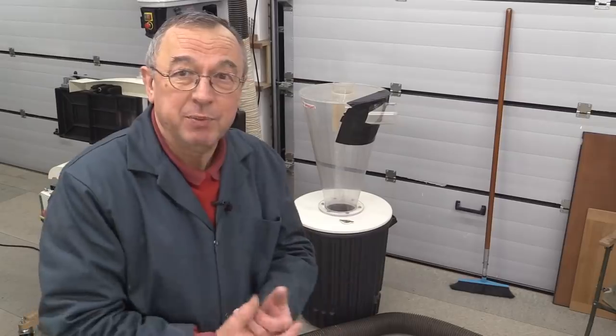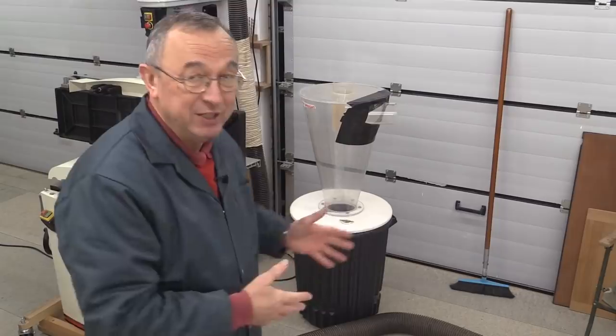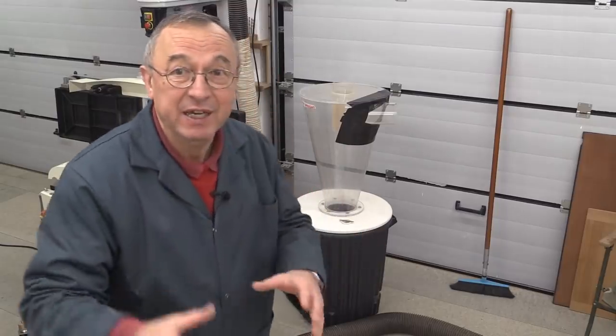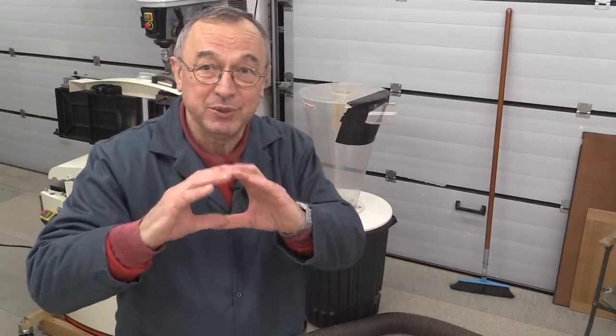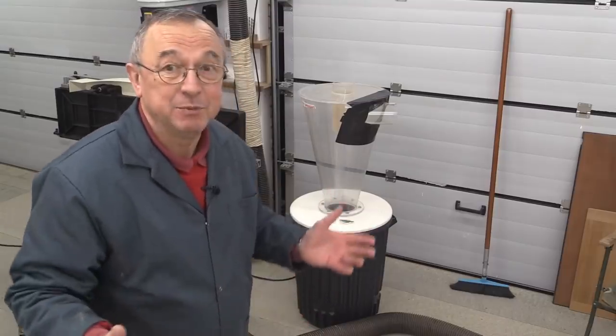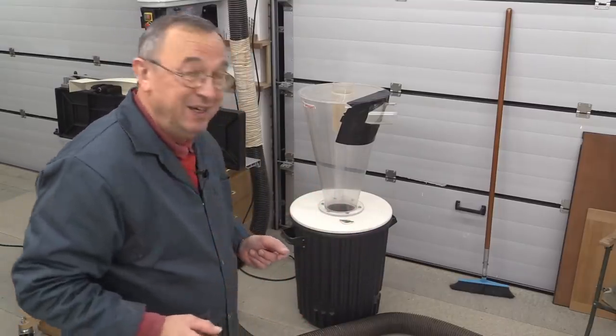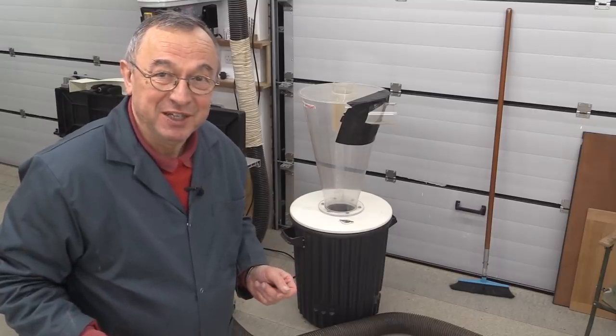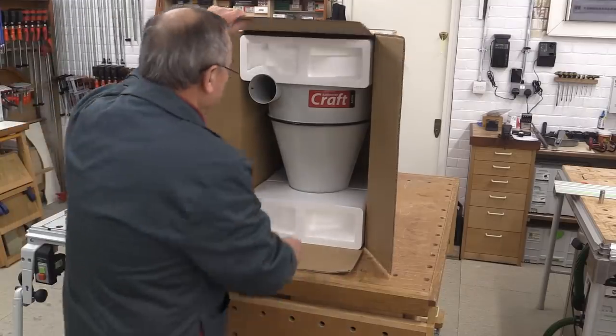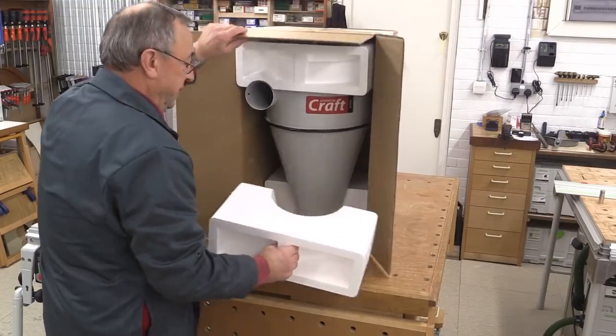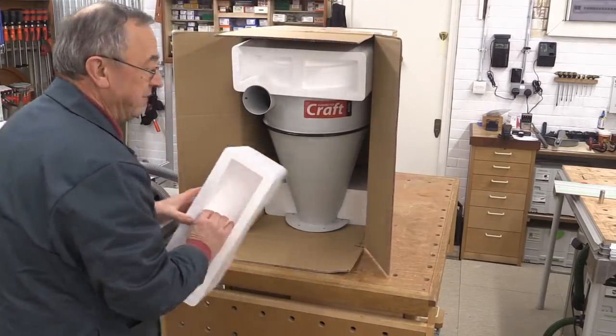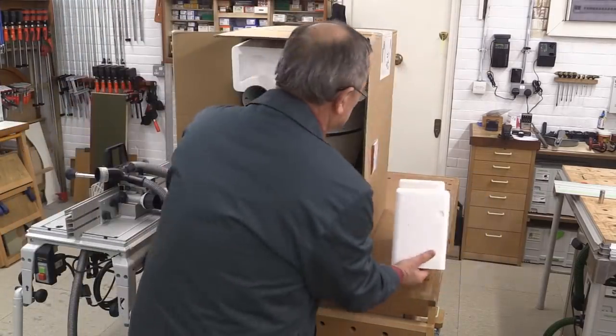So I put some pressure on Axminster. I said, look, why don't you get a standalone cyclone that people can buy for the four-inch diameter hose so they can use it with their planing machines or whatever else they happen to have. And finally, they've done it. Here it is in its box. It arrived today, and I'm going to take it out and have a look at it for the very first time.